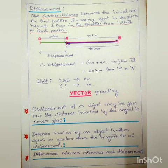As a homework, think about this point — and we will discuss it in the next class: the distance traveled by an object is either equal to or greater than the magnitude of displacement. To summarize the difference: distance is the length of the actual path and displacement is the shortest distance between initial and final position. Distance is a scalar quantity, displacement is a vector quantity. Distance is always positive, but displacement can be positive, negative, or zero.